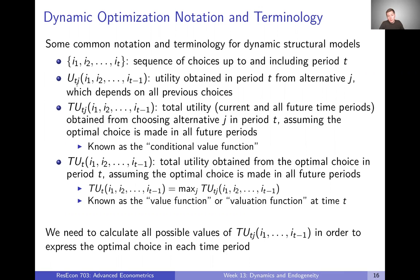For example, the utility of a certain job is going to depend on whether they went to college or not — that might set their salary. So this notation tells us the utility obtained in period T from alternative J, given the sequence of choices that have been made up to that point.